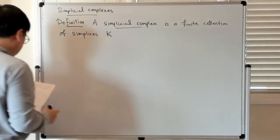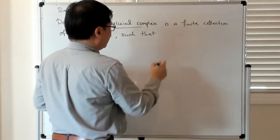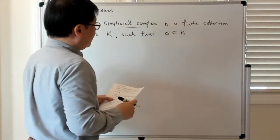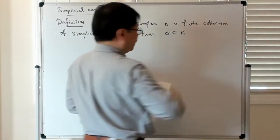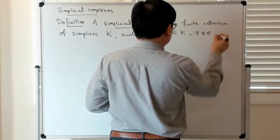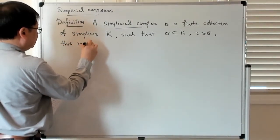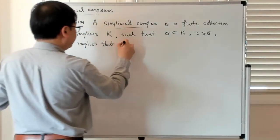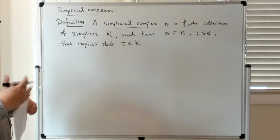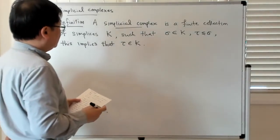The collection K has the property that if you have a simplex which is an element of the simplicial complex, and tau is a face of sigma, this implies that tau itself is also an element of the simplicial complex. Put another way, the collection of simplices is closed under taking faces of entries in the set.